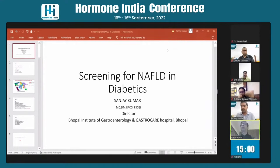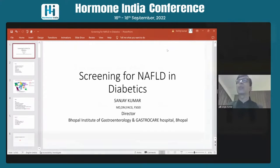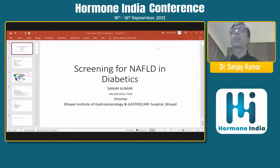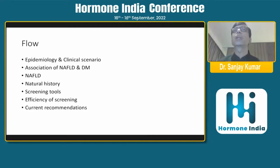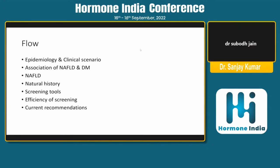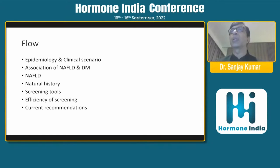This is a very important topic because most diabetics undergo regular investigations and screening for a number of diseases, but often the liver is ignored, as seen in practice. The flow of my talk will be: first, I'll briefly discuss the clinical scenario and epidemiology, then the association of NAFLD and diabetes, what is NAFLD, its natural history, what could be the screening tools, whether it is an efficient screening tool, and what are the current recommendations by various societies.